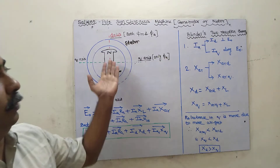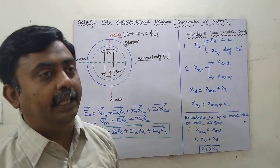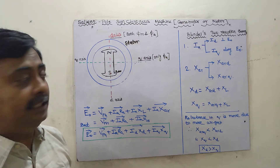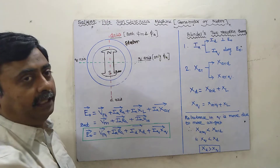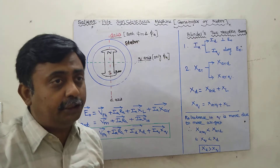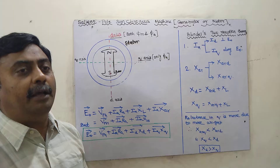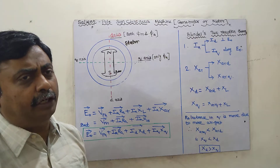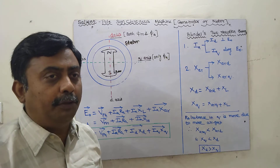Blondel proposed the two-reaction theory for this analysis. In the D-axis (direct axis), both the main flux — provided by the field coil — and the armature flux are present. The armature flux is produced when the machine is loaded: current flows through the armature winding, which acts as a magnet and produces flux. The relation between armature flux and the main flux is called armature reaction.